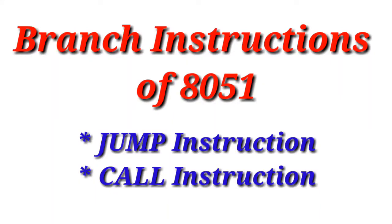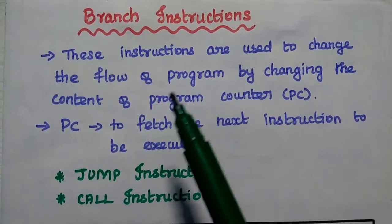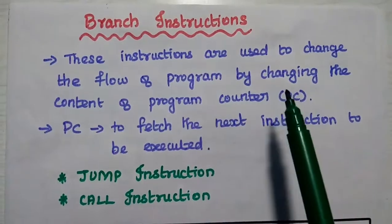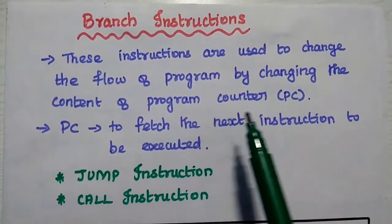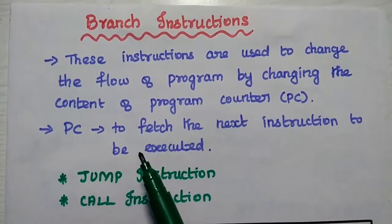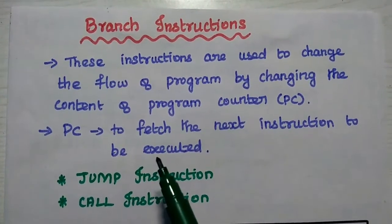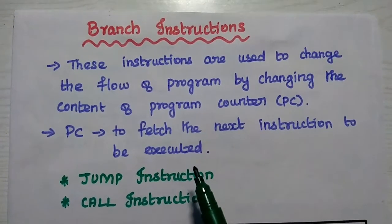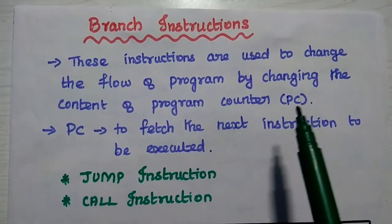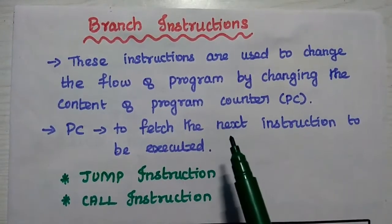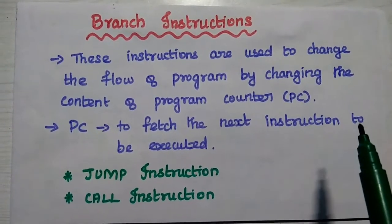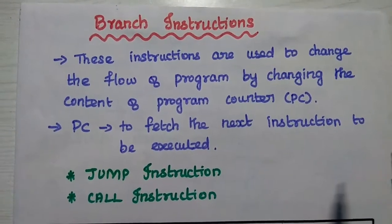Now we are going to discuss branch instructions of the AT51 microcontroller in detail. Branch instructions are used to change the flow of the program by changing the content of the program counter. The program counter is an important register used to fetch the next instruction to be executed. Branch instructions change the content of the program counter with a new address pointing to a specific task, which can be either an interrupt or subroutine.